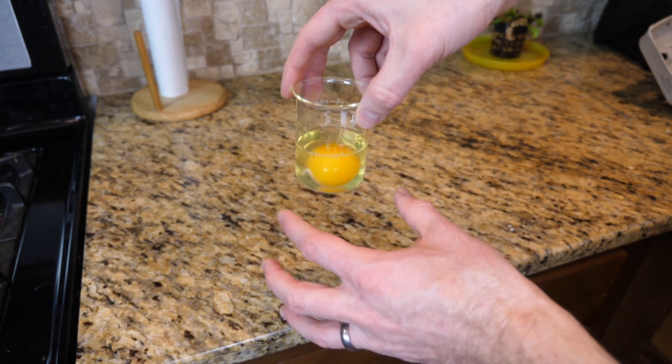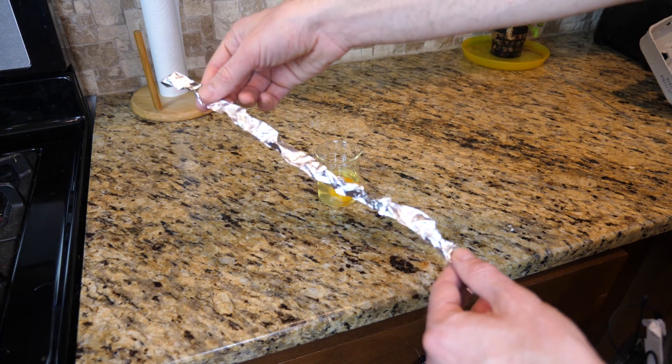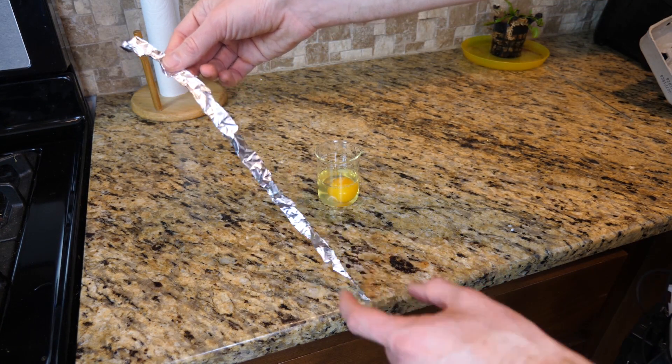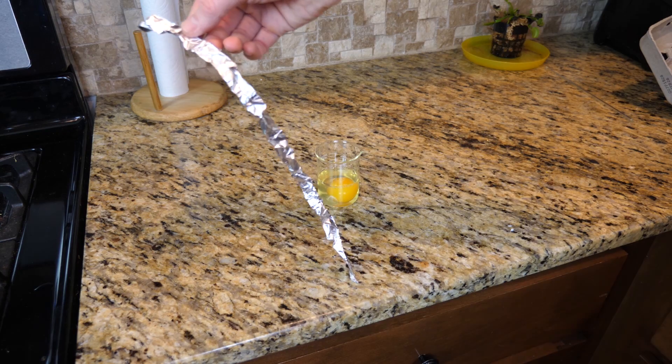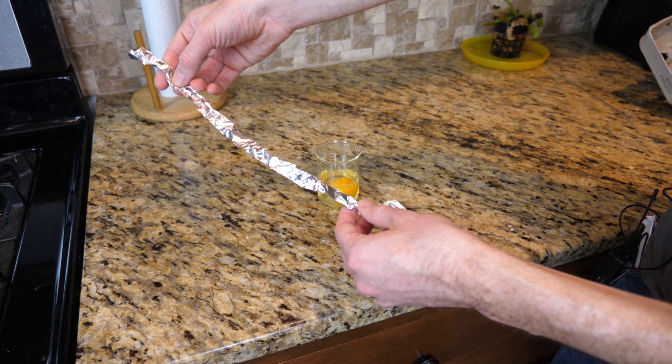Egg whites and egg yolks are made of proteins. And proteins are basically really big, long molecules made of what's called amino acids. But they're not stretched out like this.